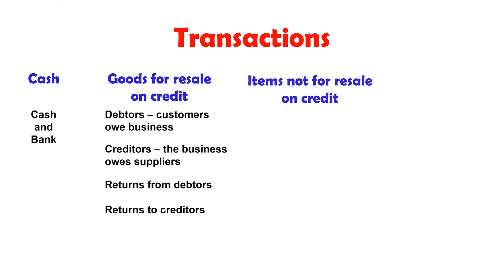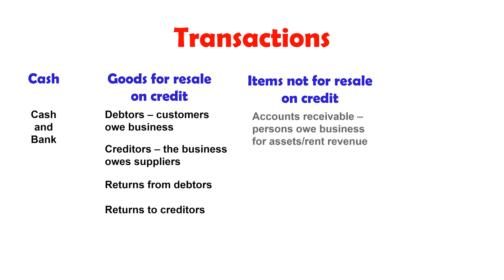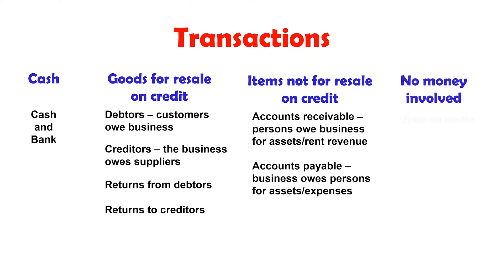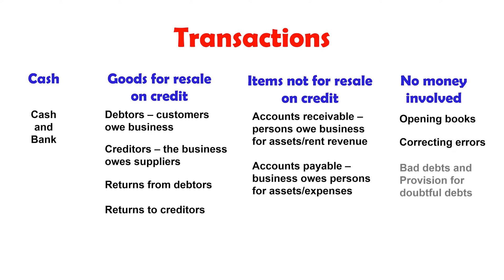Items not for resale on credit include accounts receivable, where persons owe the business for assets, and rent revenue. Accounts payable is where the business owes persons for assets, along with expenses. Transactions with no money involved include opening books, correcting errors, bad debts, provision for doubtful debts, depreciation, and provision for depreciation.